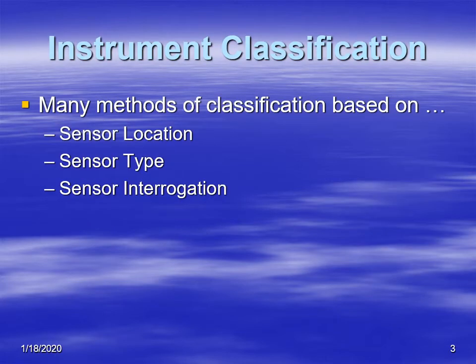Now let's get back to instrument classification. There are a few ways to classify meteorological instruments, and we base those on location, type, and interrogation — meaning where is the sensor located, what kind of instrument is it and how does it work, and how does it get information.